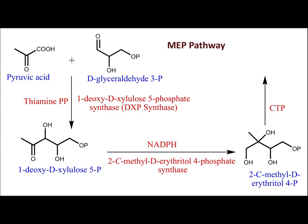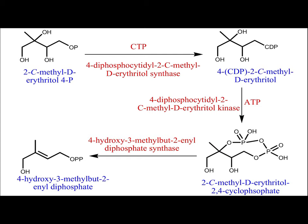MEP reacts with CTP (cytidine triphosphate) to form 4-CDP-2C-methylerythritol (CDP-methylerythritol). In this reaction, the phosphate group is removed from methylerythritol phosphate and a cytidine diphosphate (CDP) group is attached instead.